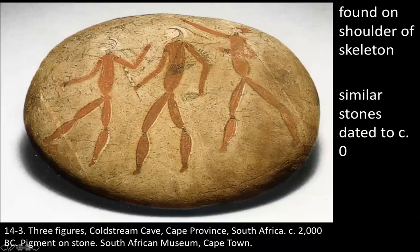These ones are a little more precise and perhaps have a relationship to more modern people. This particular one was found on the shoulder of a skeleton, placed so it fit very well in that area. There are similar stones dated to about 2,000 years ago, and this one is from 2000 BC. You can see three figures that seem to be archers, and they have coloring and details that resemble the eland, a type of antelope that lives in Southern Africa.